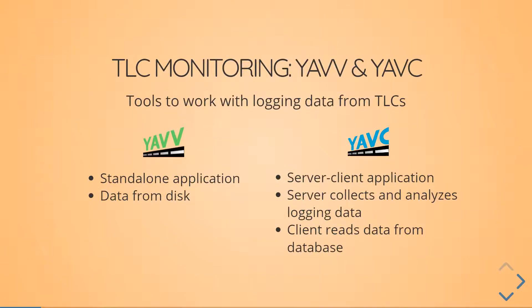JAV is a standalone application where you can work with data from disk. The other one is a server-client application where the server collects and analyzes logging data from signalized intersections, and users can use the client to read data from the database and view the logging data and analyzed logging data.